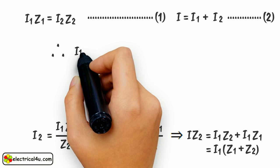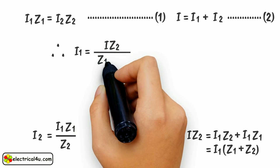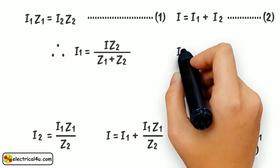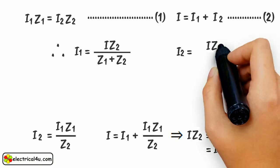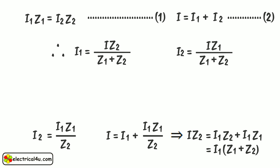Therefore, I1 equals IZ2 divided by Z1 plus Z2. Similarly, we can show I2 equals IZ1 divided by Z1 plus Z2.